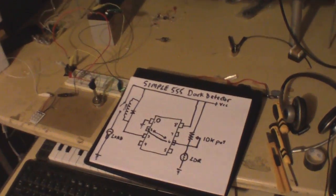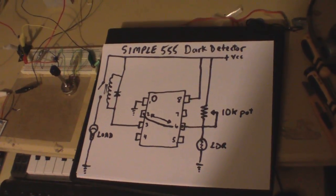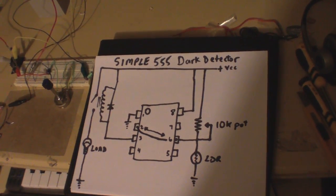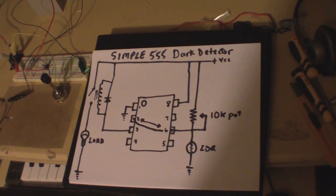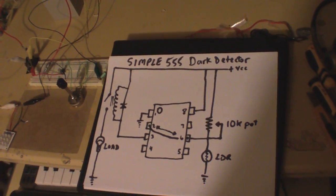So here, simple little 555 dark detector, very few components. It's just a 555, LDR, 10K pot, and that's it.